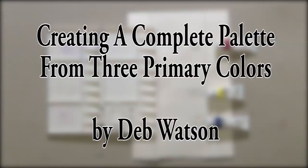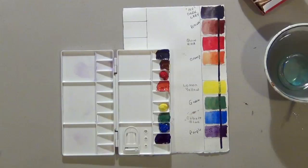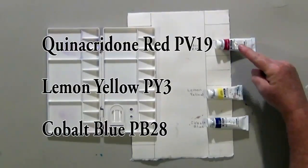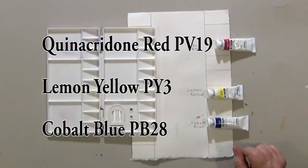Good morning. This is Deb Watson and today we're going to create a complete palette using three primary colors. The colors I'll be demonstrating are quinacridone red, lemon yellow, and cobalt blue. And we're going to make a palette you can paint anything in the world with.